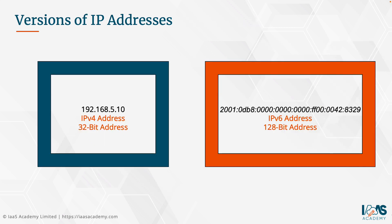One of the fundamental aspects of building your network, and indeed when building VPCs on the AWS platform, is understanding how IP addresses work, how they are formatted and how they're configured. When it comes to IP addresses, there are actually two versions. There's the IPv4 address, which is a 32-bit address and has been around for decades, and then there's the IPv6 address, which is a 128-bit address and is relatively new in the world of IT.